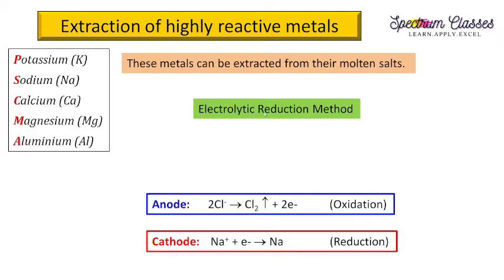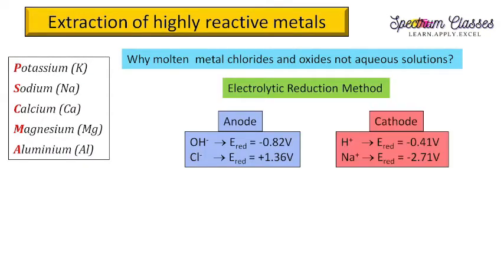Now the question is: why use molten salts only, and why not aqueous solutions? In aqueous solution, sodium chloride is dissolved in water and that solution is electrolyzed. But instead, we use molten NaCl — meaning the sodium chloride is melted, and electrolytic reduction is performed on that molten salt. In the molten state we have only Na⁺ and Cl⁻, but in the aqueous case we also have water, which gives us H⁺ and OH⁻.